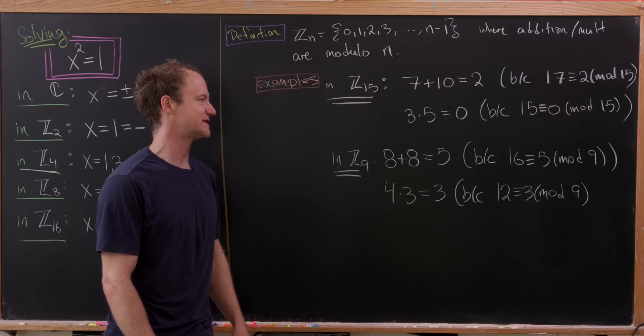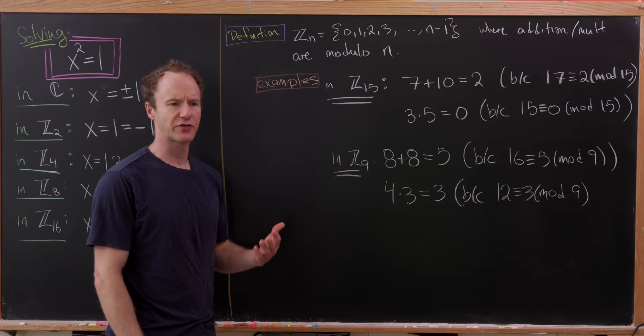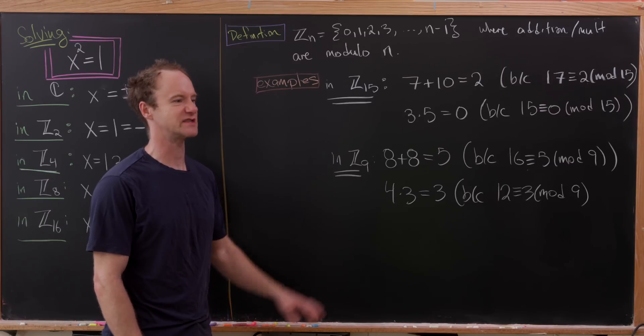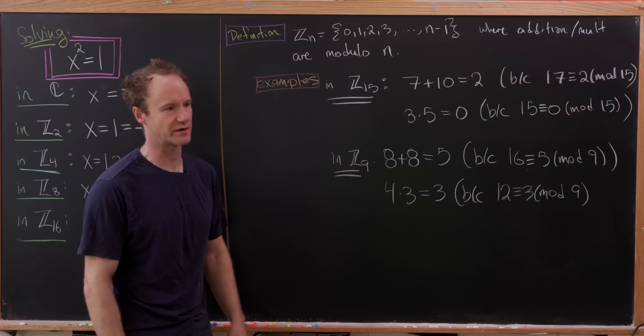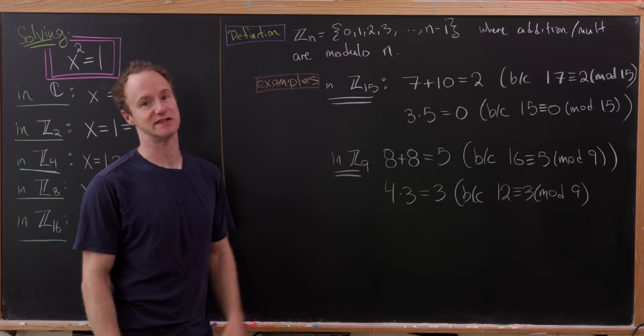Then next, let's notice that 3×5 = 0. But 3 and 5 are neither 0. So this marks some sort of difference from the real numbers. Observe that we multiply two non-zero numbers and we get 0.